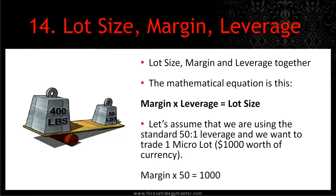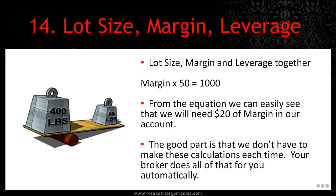Now, lot size, margin, and leverage together. The mathematical equation is this: margin times leverage will equal the lot size. Let's assume that we're using the standard 50 to 1 leverage and we want to trade 1 micro lot – $1,000 worth of currency. What do we have to put up times 50 to equal 1,000? From the equation we can see that we'll need $20 of margin. Our $20 of margin times the 50 to 1 leverage – 20 times 50 – gives us $1,000. The good part is that your broker does all of that for you automatically. Margin times leverage will equal the lot size.